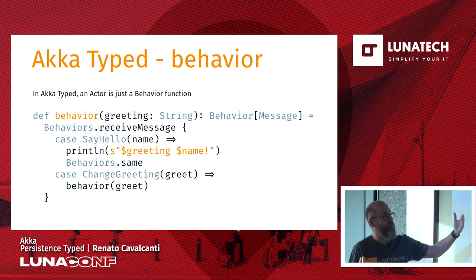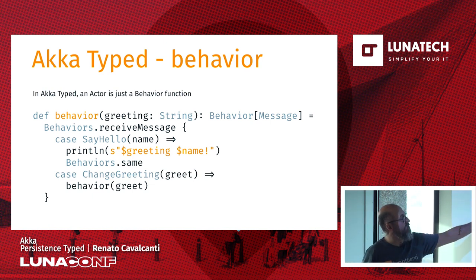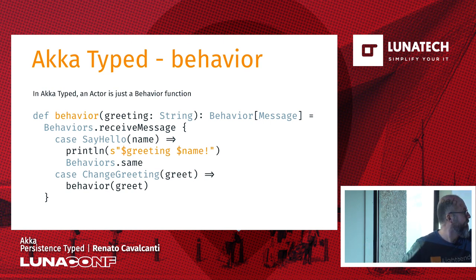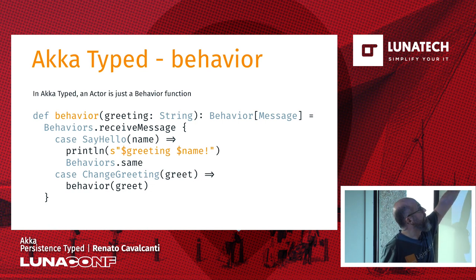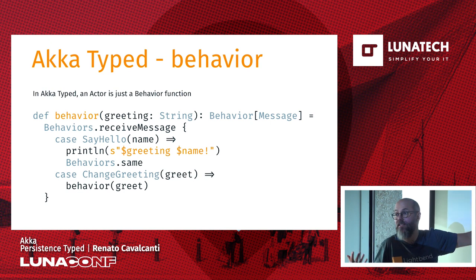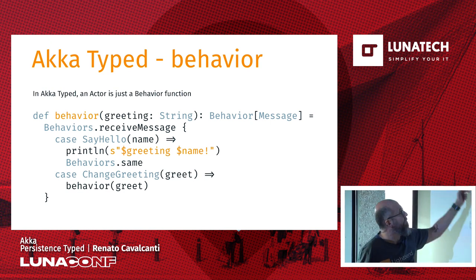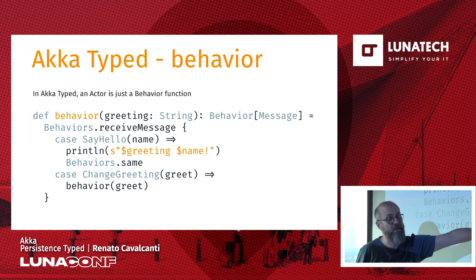In that transition from one behavior to the other, you do some work or side effects. In the say hello case I just print something and return the same behavior. In the change greeting case, instead of saying 'hello Lunatec' I say it in Dutch. I change the greeting with a new message, returning a new behavior. I'm recursively calling this function with the new greeting. The state here is in the scope of my function — it's the greeting variable. So next time I get say hello, that greeting will be whatever I passed.